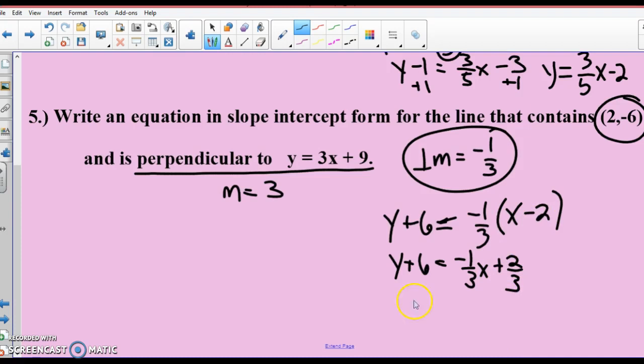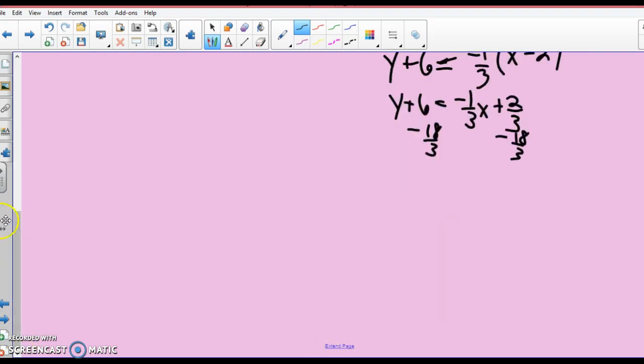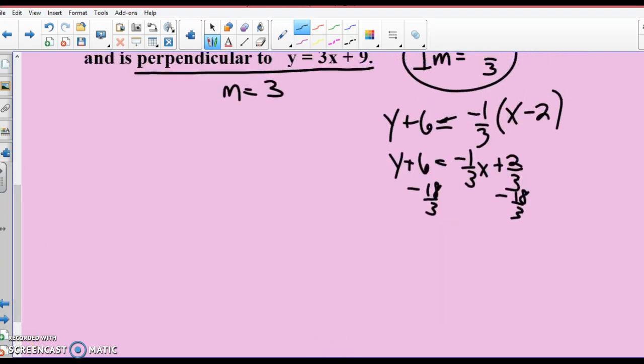Make sure you use the perpendicular slope. Now, the parallel slope, we're going perpendicular so it's the negative reciprocal. Transform it. So, y plus 6 uses the distributive property negative 1/3 x plus 2/3. I'm going to subtract 18/3. Why did I do that? I'm basically subtracting 6. So, I've got y equals negative 1/3 x minus 16/3.